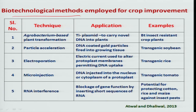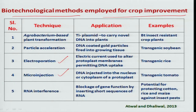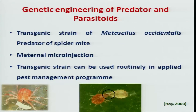Other important biotechnological methods employed in crop improvement include, besides Agrobacterium-based and gene gun methods, several other approaches such as electroporation, microinjection, and RNA interference. RNA interference involves silencing a gene of interest — though no commercial product has been developed so far, a lot of research is going into this area.